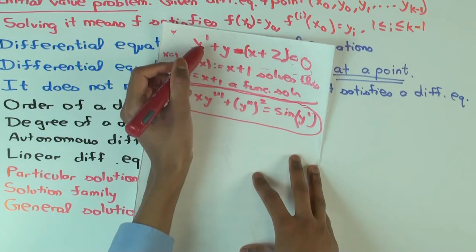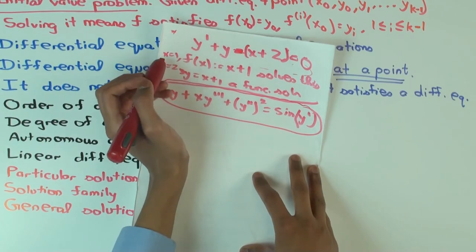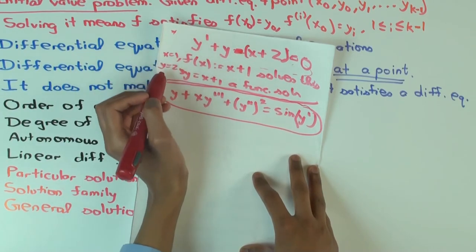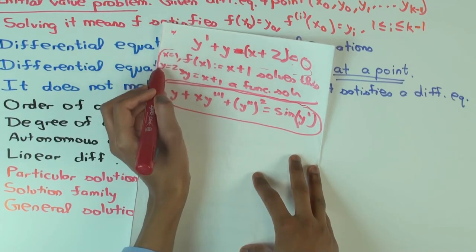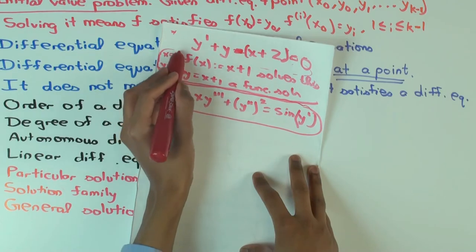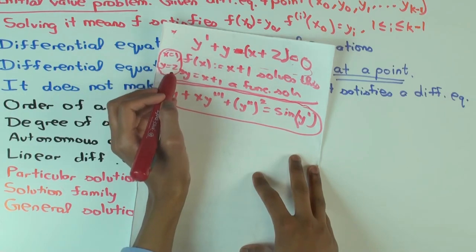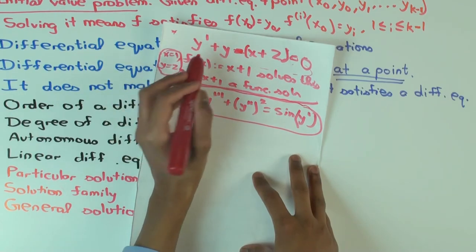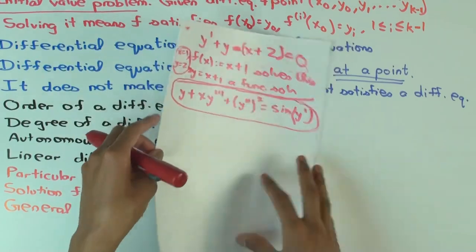Because you are going only up to the first derivative in this differential equation, you actually need to only specify up to y₀. So this is the complete initial value problem, because you have to specify up to one less than the number of derivatives you have.